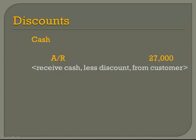When we look at our journal entry, accounts receivable is going down by $27,000 and cash received is $26,460. The difference between those is the sales discount — $540. It is 2% of the amount of the receivable and it is the difference that makes the journal entry balance. That sales discount account is something we want to track separately because we need to see how much we are giving away in discounts over the life of this company.